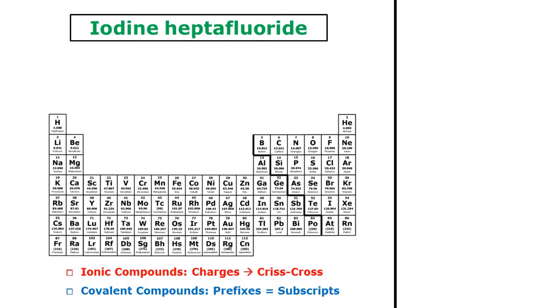Let's review naming ionic and covalent compounds and make sure that we can tell when to use charges in the crisscross method and when to just use prefixes to let us know what the subscripts should be.